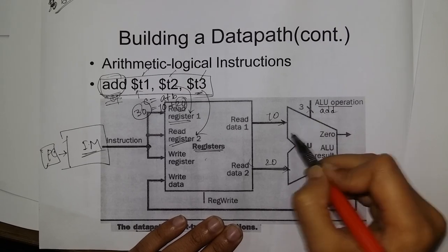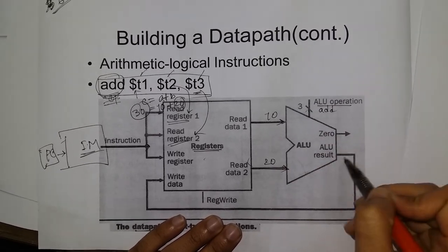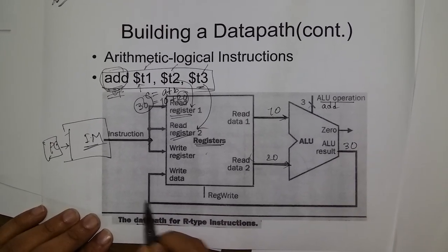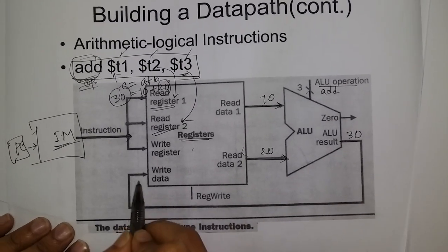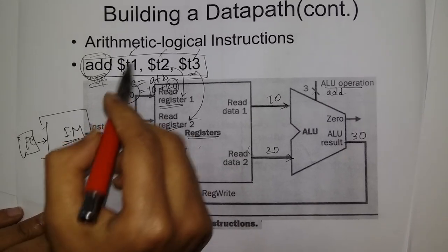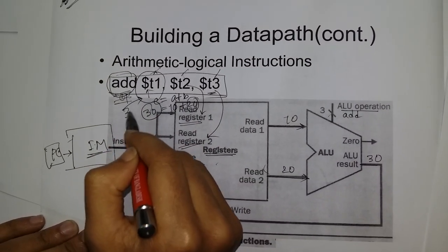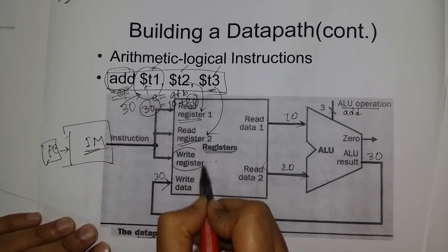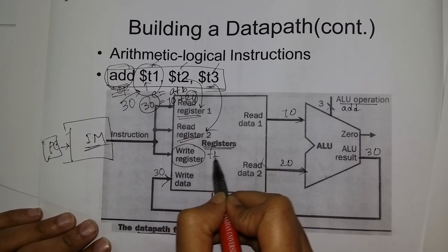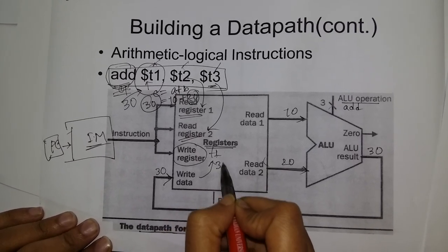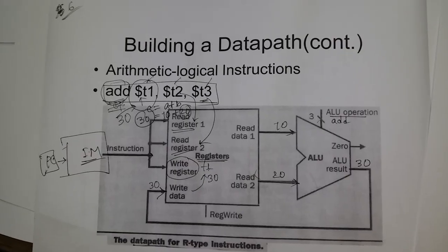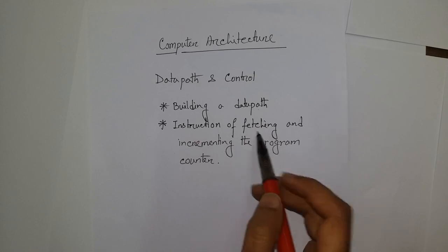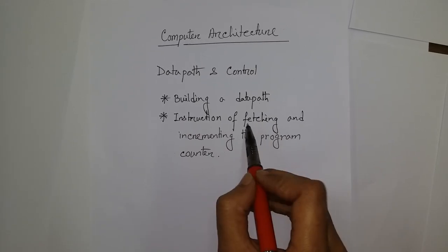The ALU adds the values to get 30. Then the output is 30, which is written to the output port as the right data. T1 now contains 30 as the final output.